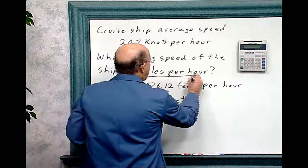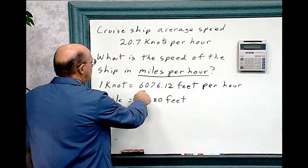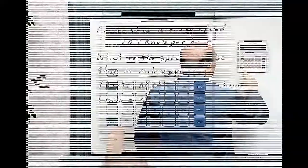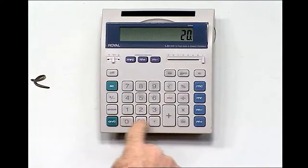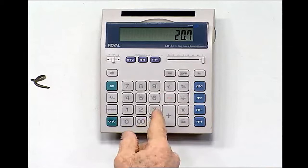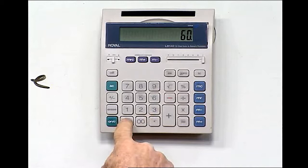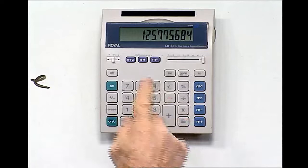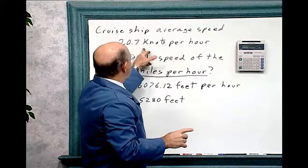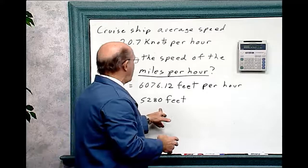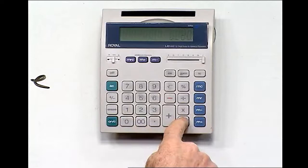So we're going to convert this. First of all, one knot equals 6,076.12 feet per hour. So we're going to multiply 20.7 times 6,076.12 equals - and that's how many feet now per hour that ship is traveling. Now we have to divide that by 5,280 feet to get our answer. Divide that by 5,280 equals.